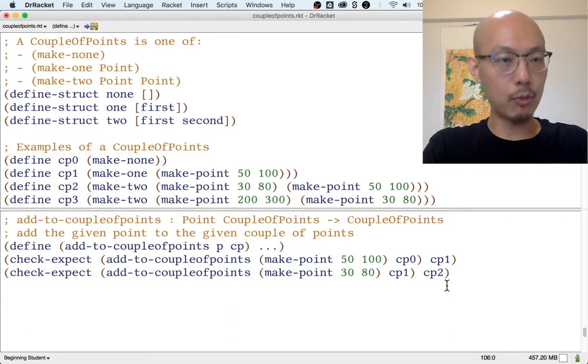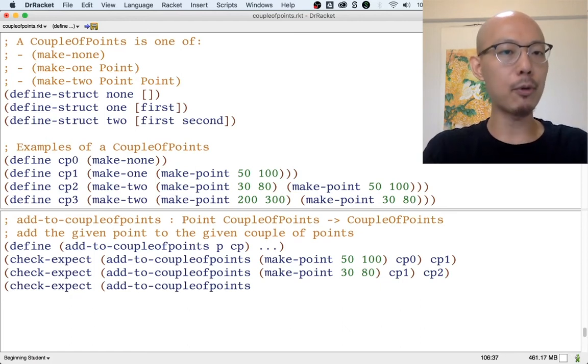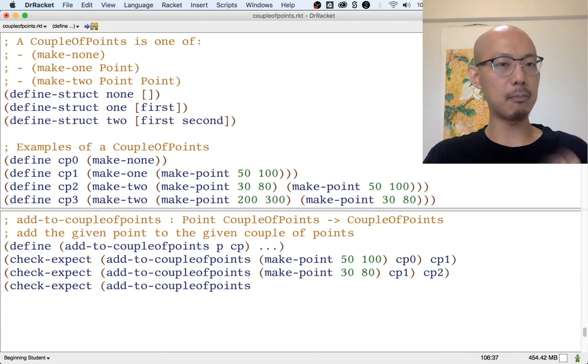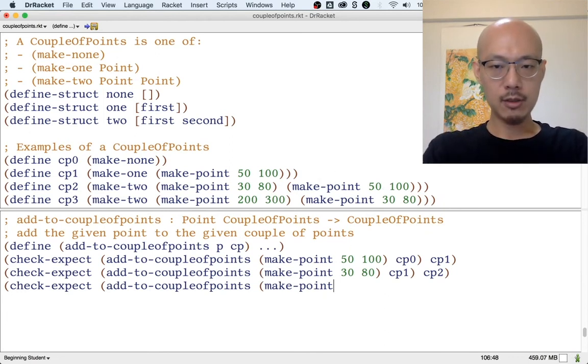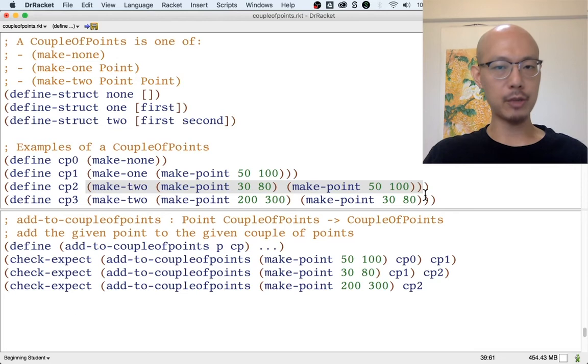Now, let's write one more example, which we need because, again, we need to have examples for every possible kind of input. And so far, we have no example where the input is a makeTwo. So what if we're adding a new point to a makeTwo, like CP2? CP2 is a makeTwo.